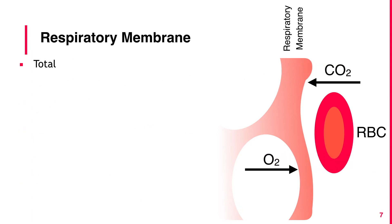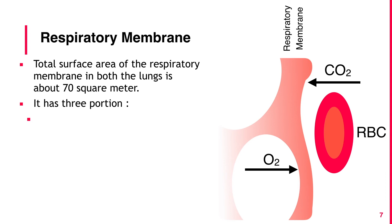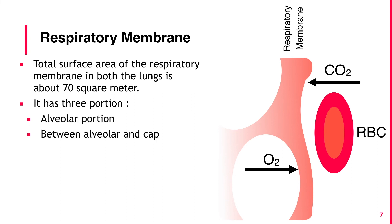The total surface area of the respiratory membrane in both lungs is about 70 square meters. It has 3 portions: 1. Alveolar portion, 2. Between alveolar and capillary portion, 3. Capillary portion.